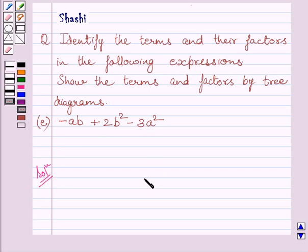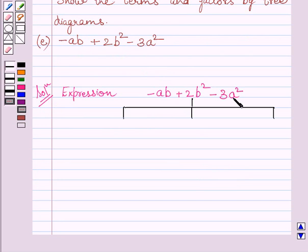Now, we are given expression minus AB plus 2B squared minus 3A squared. In this expression, we are having three terms. They are minus AB, 2B squared, and minus 3A squared. We know parts of an expression which are formed separately first and then added are called terms.